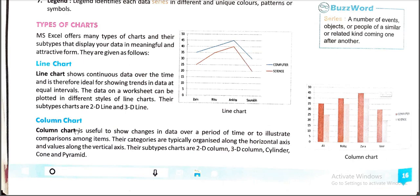Next one is column chart. Column chart is useful to show changes in data over a period of time or to illustrate comparisons among items. Their categories are typically organized along the horizontal axis and values along the vertical axis. Their subtype charts are 2D column, 3D column, cylinder, cone and pyramid.